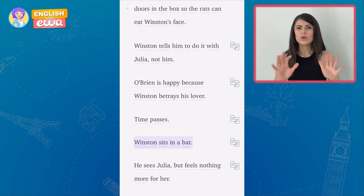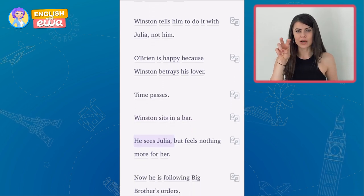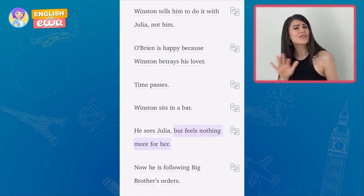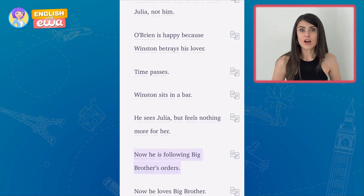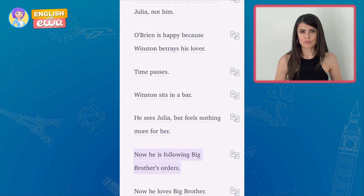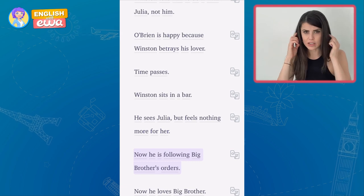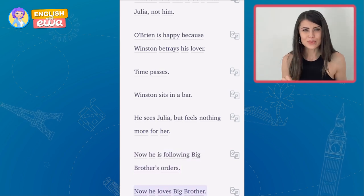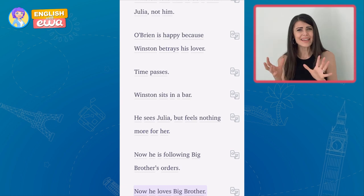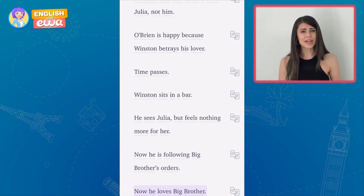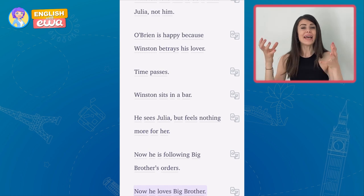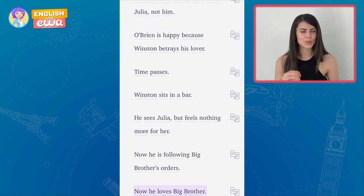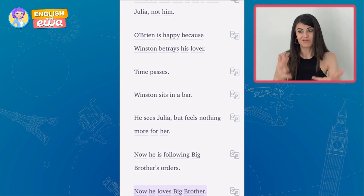Time passes. Winston sits in a bar. He sees Julia but feels nothing more for her — he doesn't love her anymore. Now he is following Big Brother's orders and listening to the rules. This is illegal, so he will not do that. Now he loves Big Brother. O'Brien managed to break his mind and make him one of Big Brother's men.